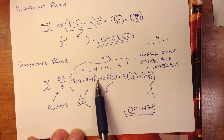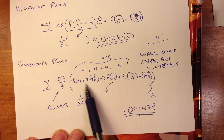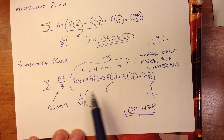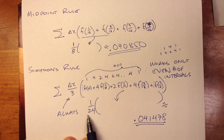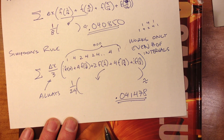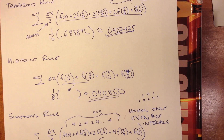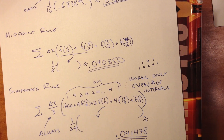Following that pattern, evaluating the function with the correct coefficients, we then multiply by delta x over three — which is one eighth divided by three, or one twenty-fourth. Doing all that gives a total of approximately 0.041478. You can see all three approximations are very close. There are also ways of calculating the error for these methods, which I'd invite you to look up in the text — we'll do that in another problem.